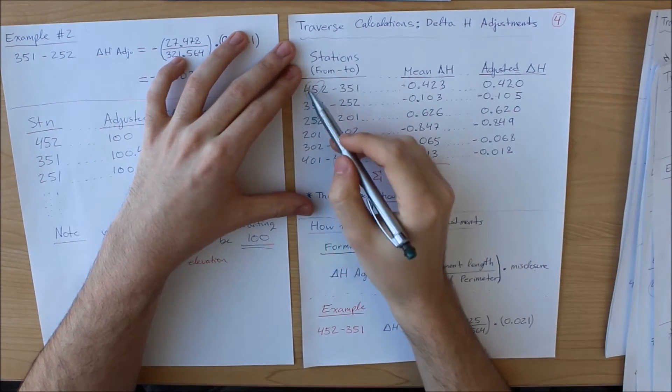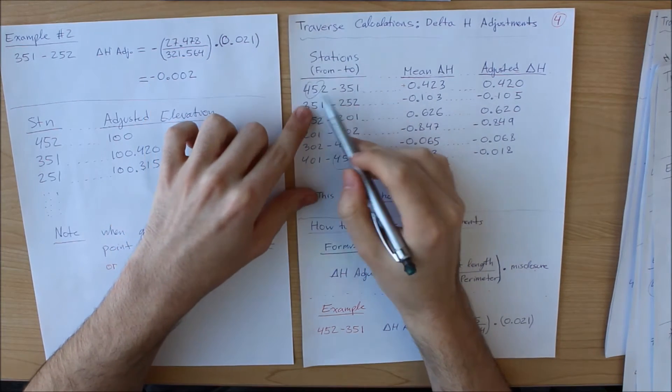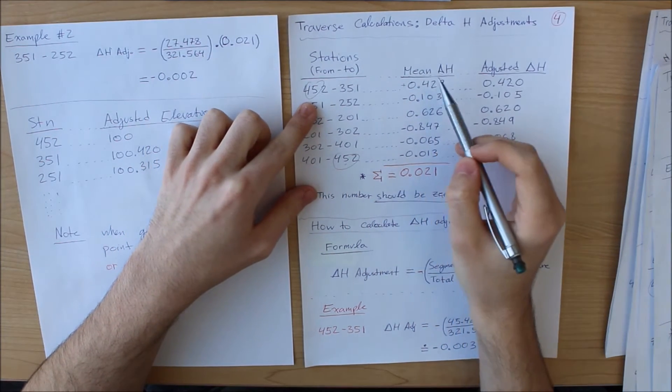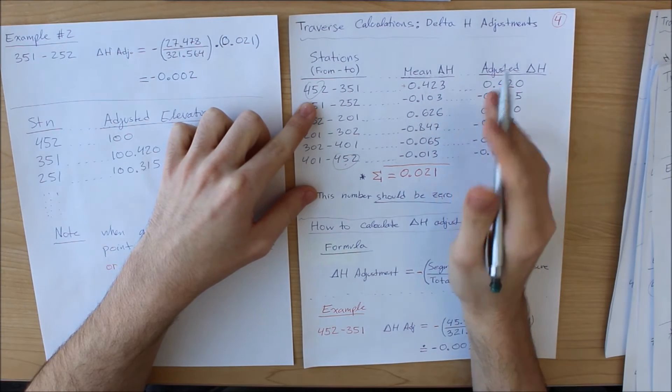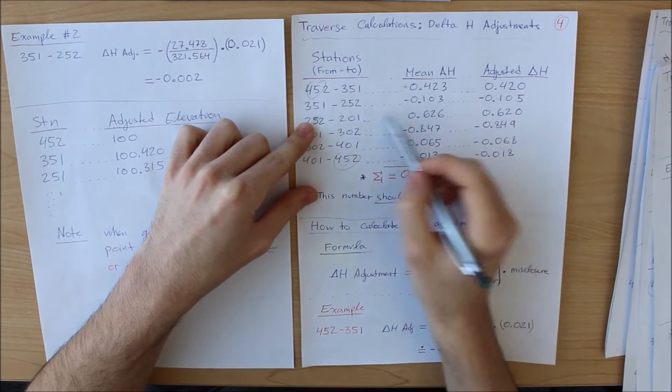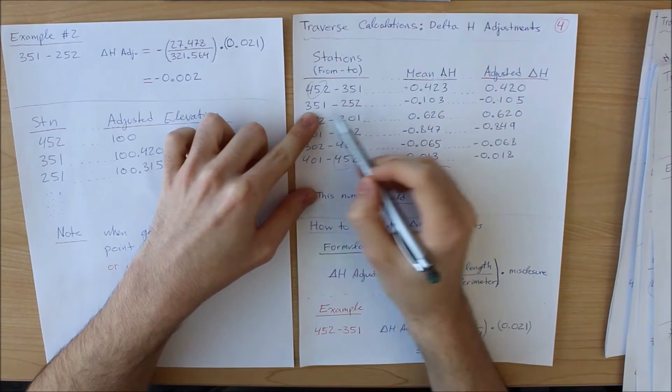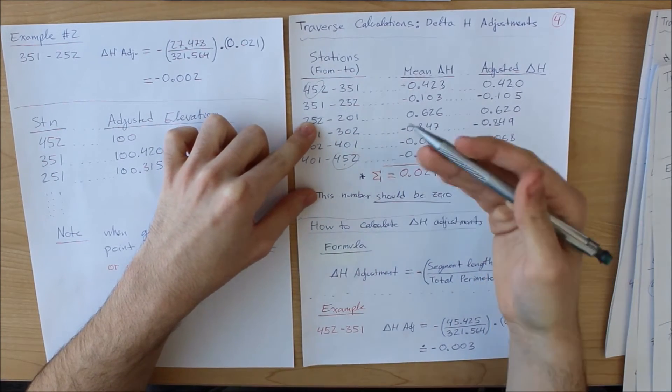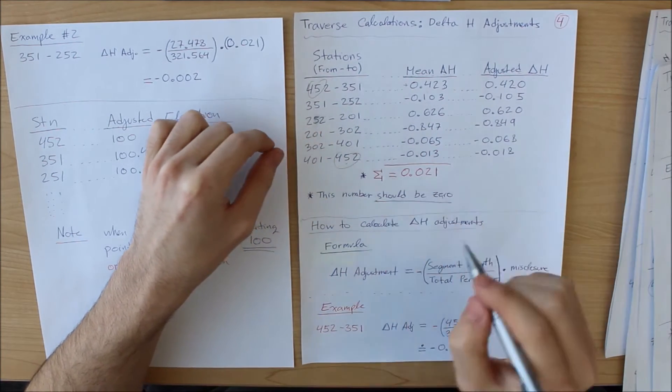So what this means is from 452 to 351, station to station, we are going up by 0.423 meters. Likewise, that applies for everything else. From this point to the next point, we're going down. That's what the negative means. Positive up, negative down.